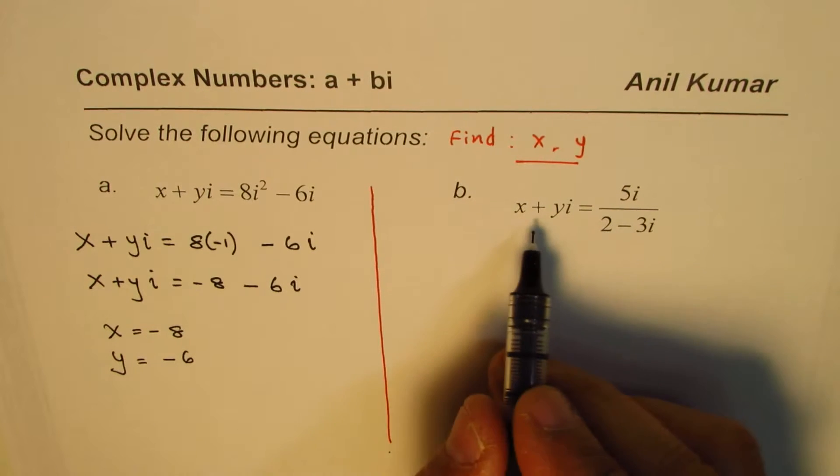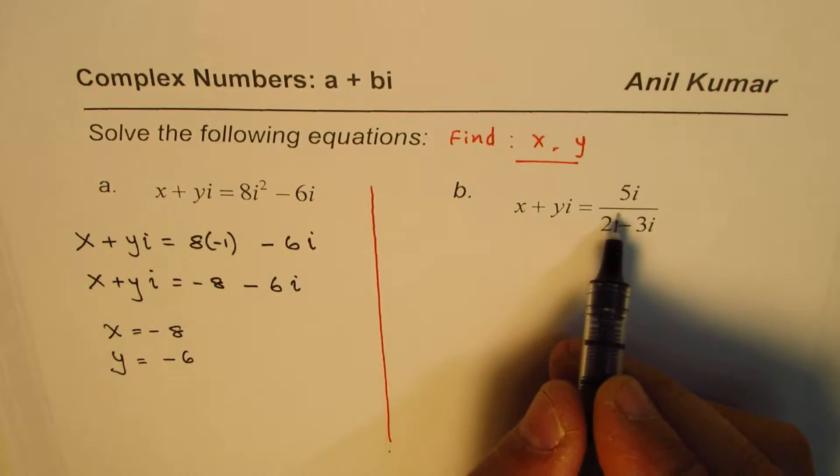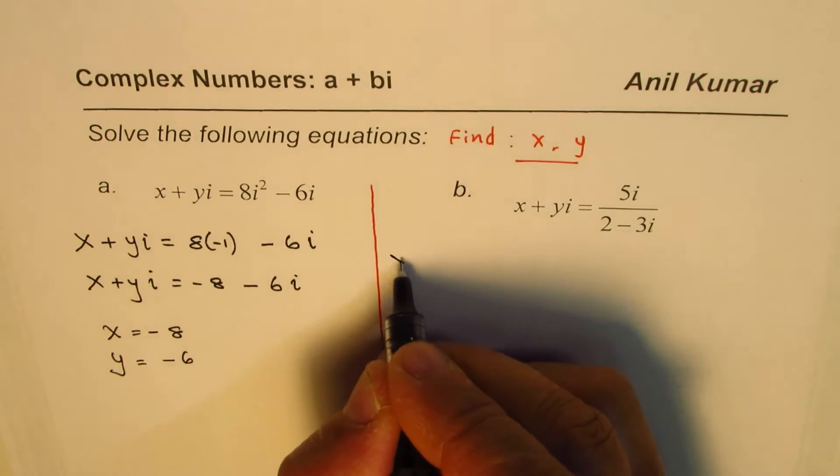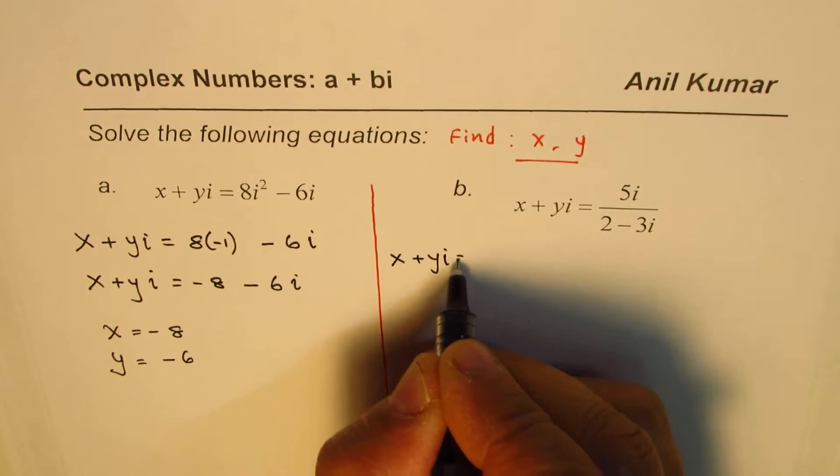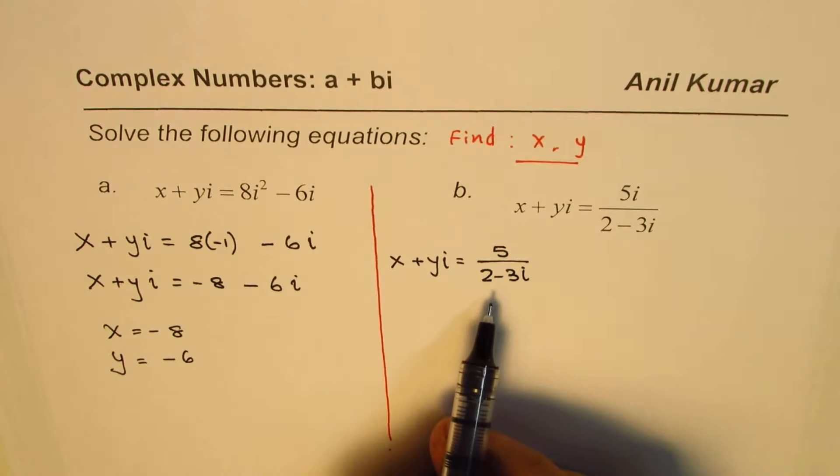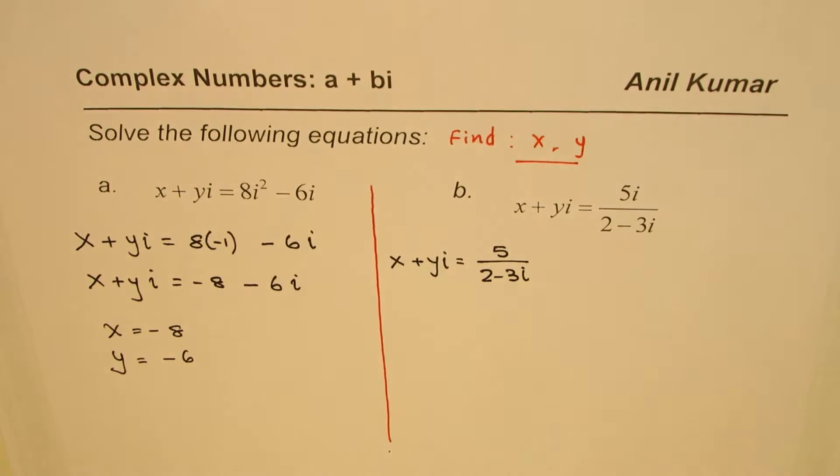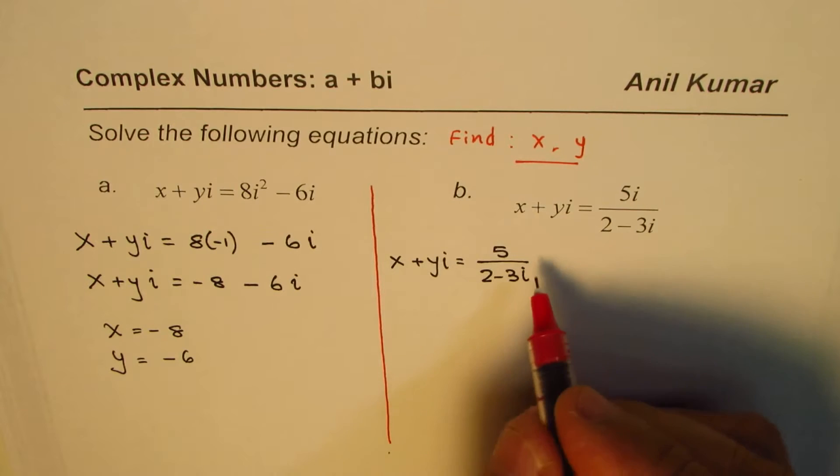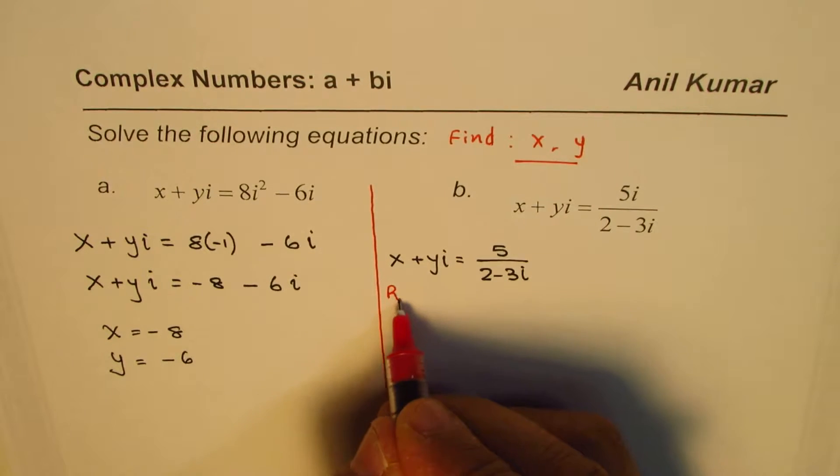Now let us move on to the next one, which is x plus yi equals 5 over 2 minus 3i. Now what should we do? We need to realize the denominator. So here the concept is to realize denominator.